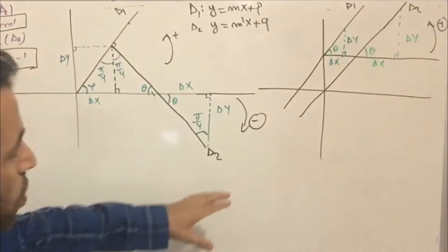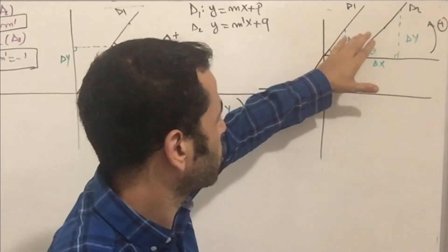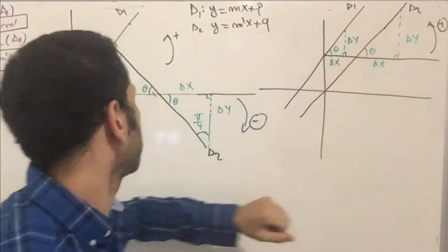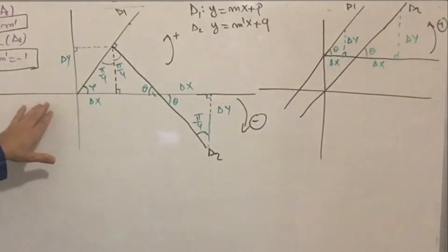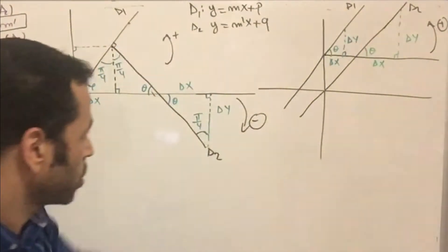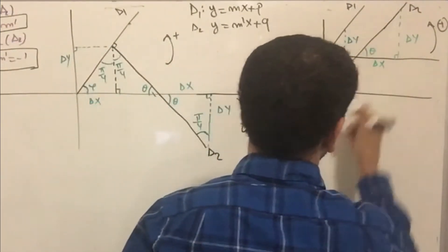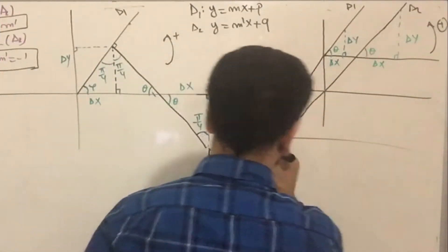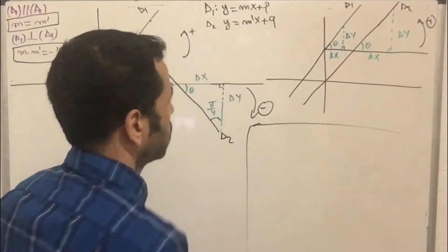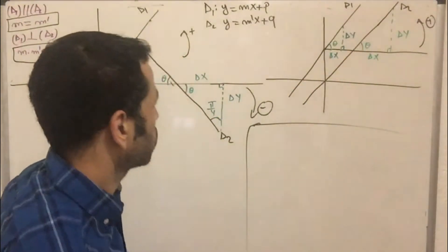We are going to look at two cases. The first case is when these equation lines are parallel, and the second case is when these equation lines are perpendicular. Let's start with the first case — parallel lines.